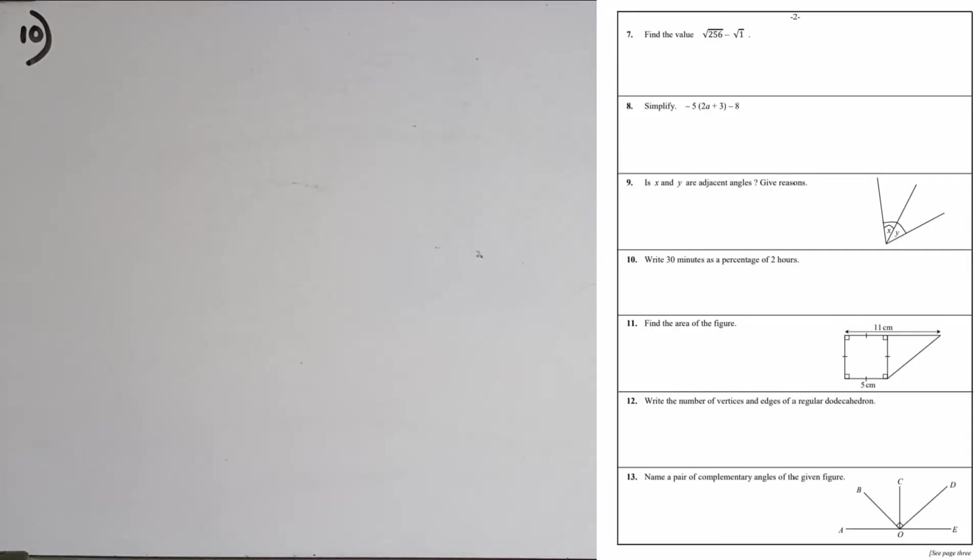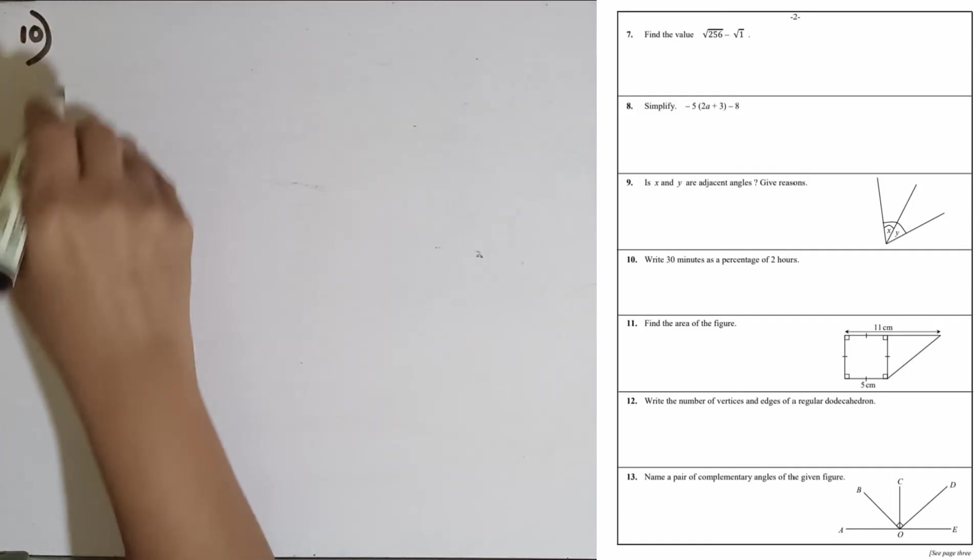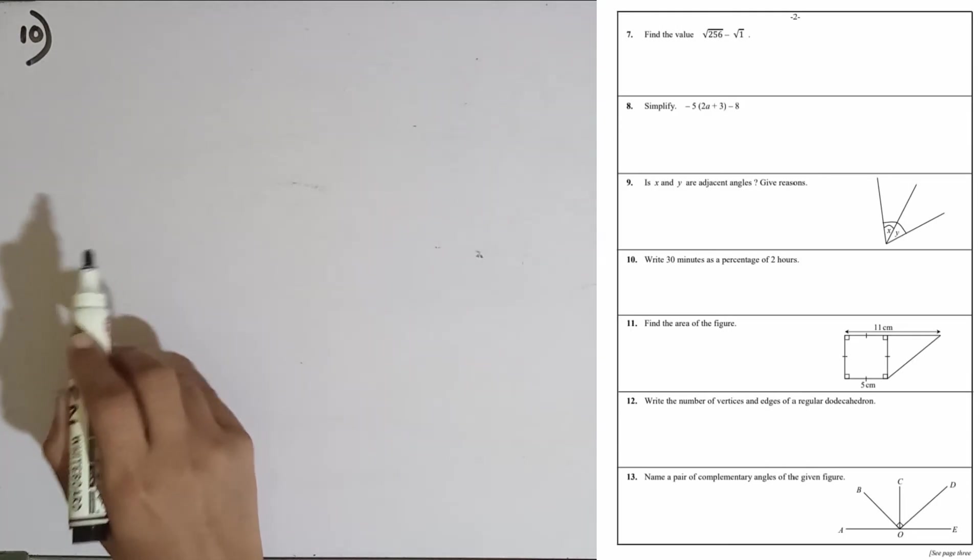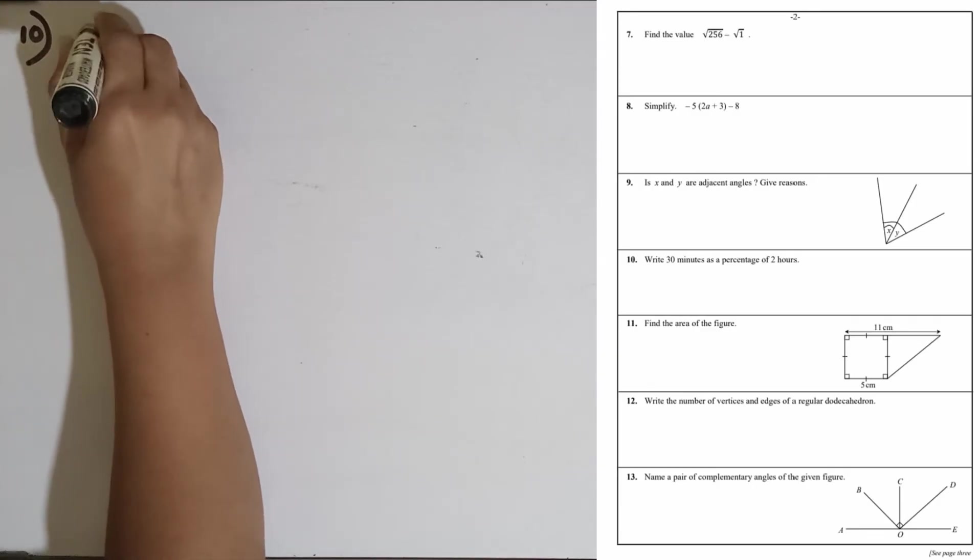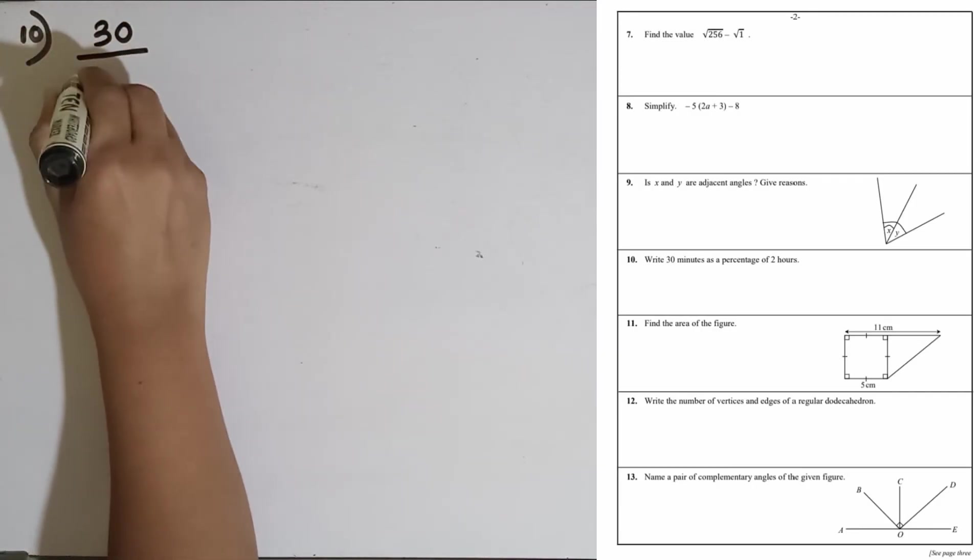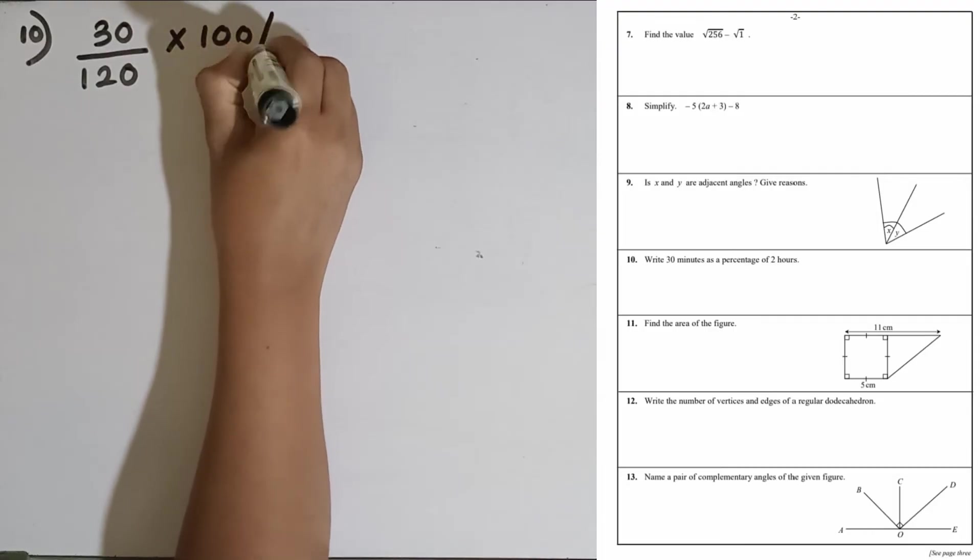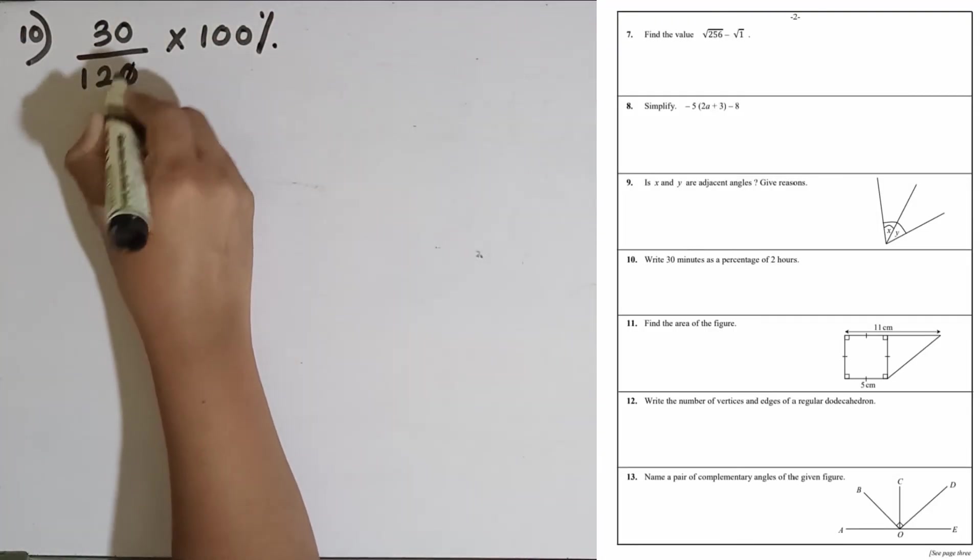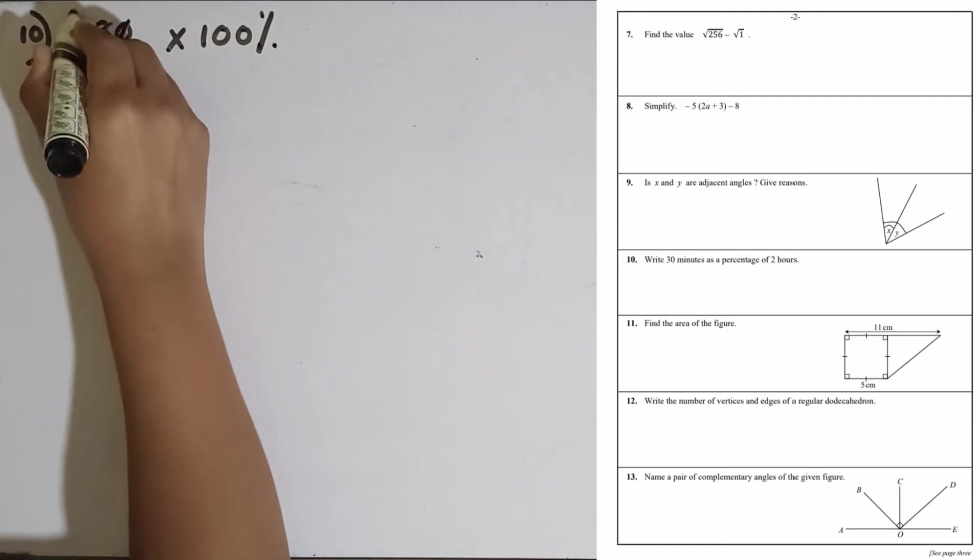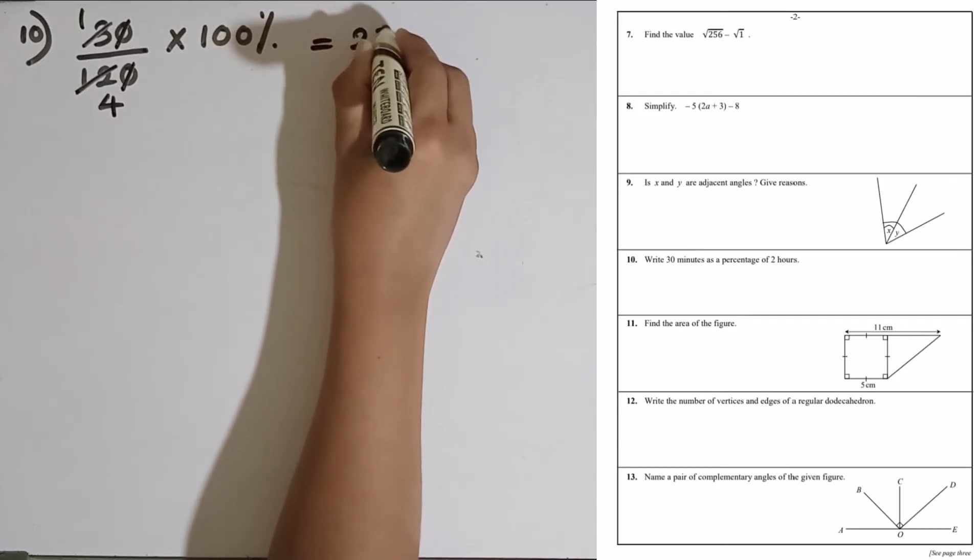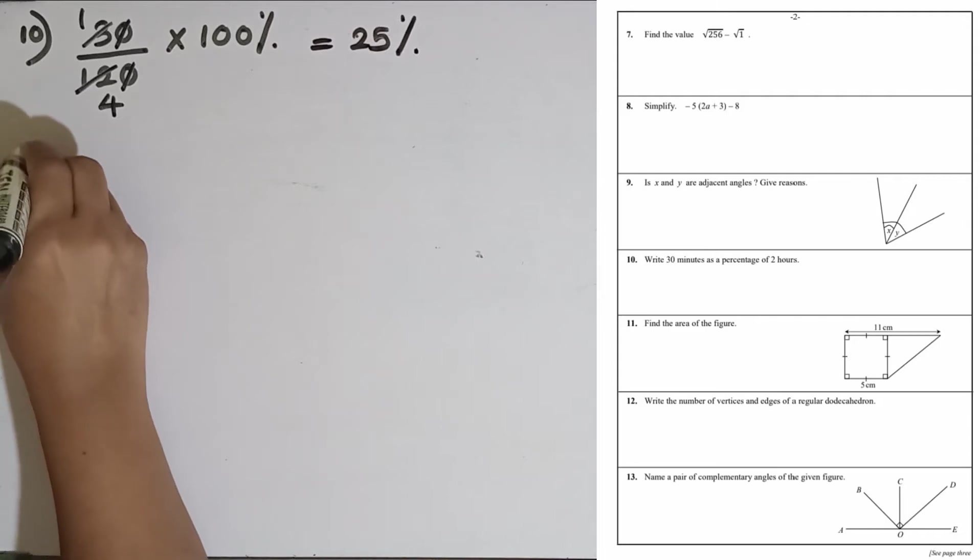Question number 10: Write 30 minutes as a percentage of 2 hours. First we have to write it as a fraction. We have to convert 2 hours into minutes. 1 hour equal to 60 minutes, then 2 hours equal to 120 minutes. So we can write it as a fraction, 30 over 120. Now to convert this into a percentage, we have to multiply by 100%. Then we can remove the zeros, 3 times 4, 100 divided by 4 is 25. The answer is 25%.